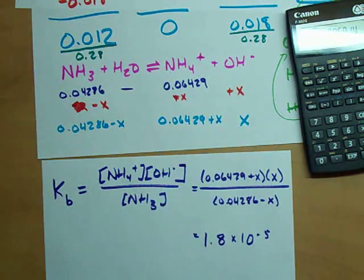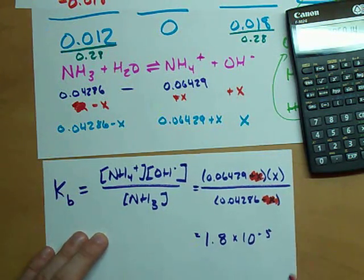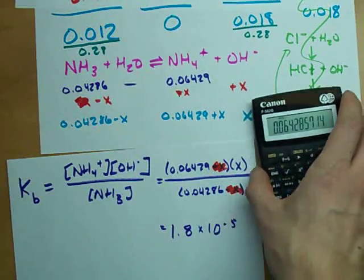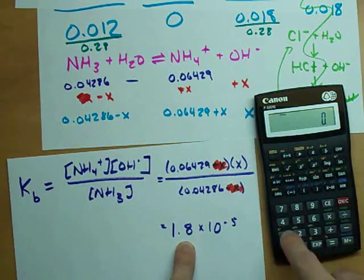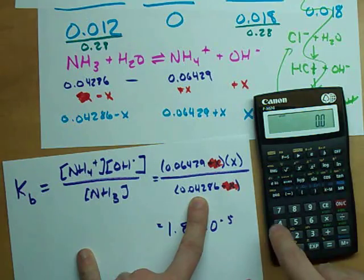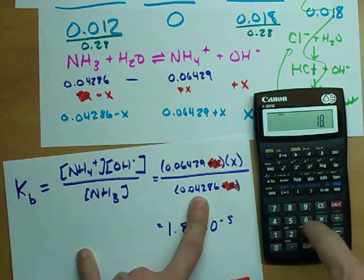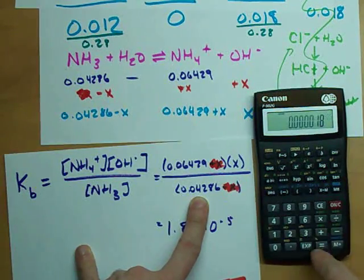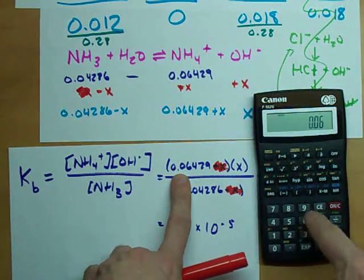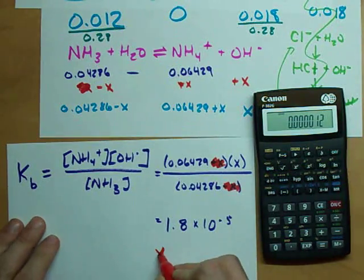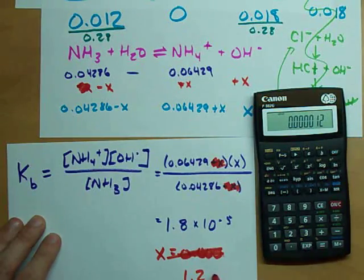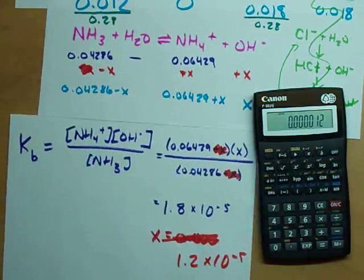Solve for x. I think you'll find x is insignificant, and so all I need to do to solve for x is take 1.8 × 10^-5, multiply it by 0.04286, and divide it by 0.06429. I get my x to be 1.2 × 10^-5. So that x is pretty insignificant relative to these two numbers, so my assumption was okay. But what's important to note is that my OH- concentration is x, so OH- is equal to 1.2 × 10^-5.